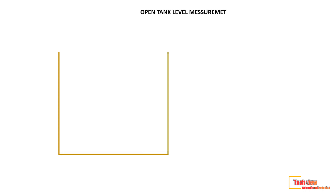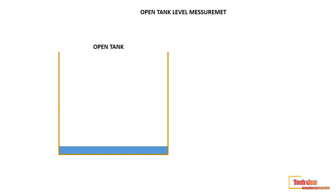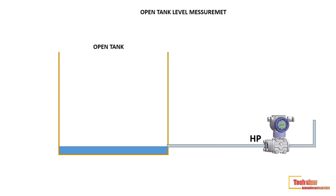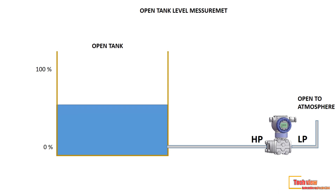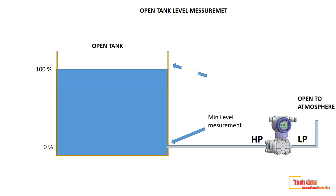Let's see how a differential pressure transmitter measures level. First, we talk about open tank level measurement. For open tanks — tanks open to the atmosphere — only the high pressure end of the DP transmitter needs to be connected to the bottom of the tank, and the low pressure end is open to the atmosphere. The differential pressure is therefore the hydrostatic head or weight of the fluid in the tank. The highest level detected depends on the maximum height of fluid above the transmitter, while the lowest level detected is based on where the transmitter is attached.